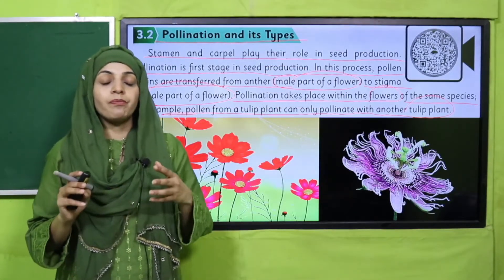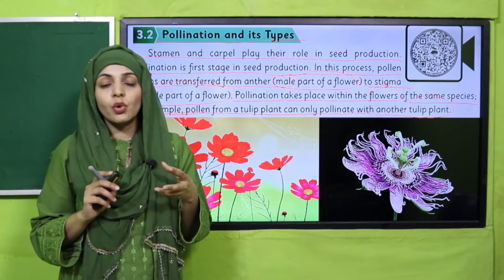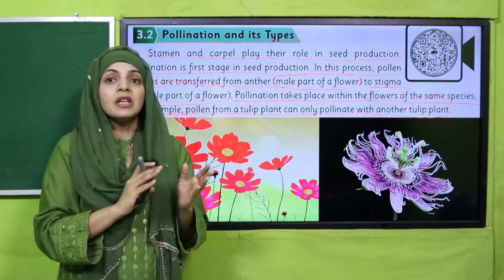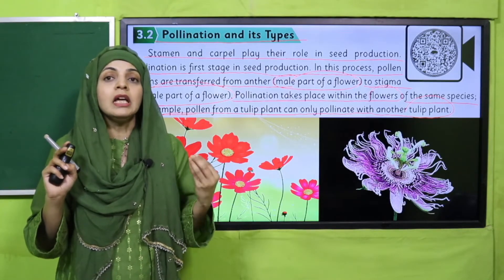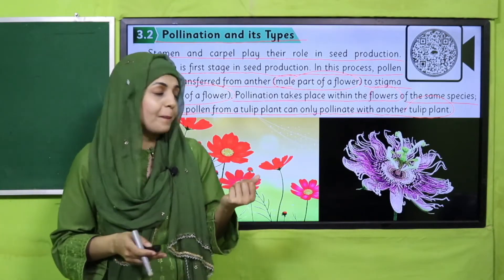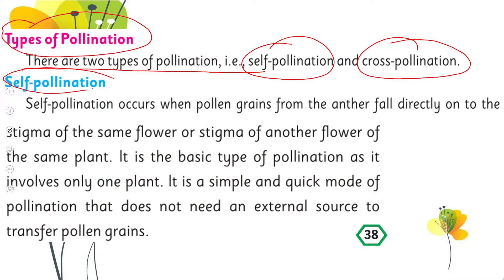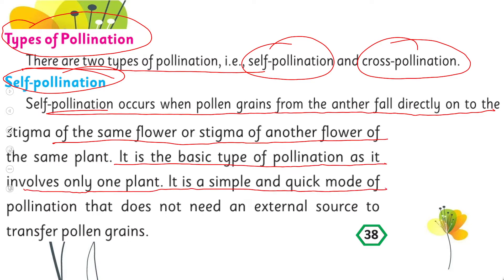Pollination happens when insects travel from plant to plant. There are two types of pollination. Pollination is the transfer of pollen grains from the anther to the sticky stigma. After pollination, seed and fruit production occurs. Self-pollination occurs when pollen grains from the anther fall directly onto the stigma of the same flower, or onto the stigma of another flower of the same plant. It is the basic type of pollination, involving only one plant, and is a simple and quick mode that does not need an external source.